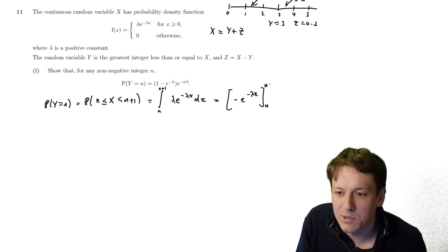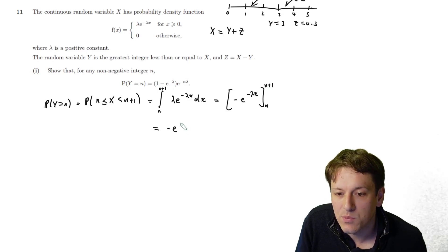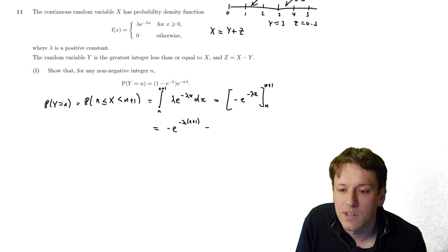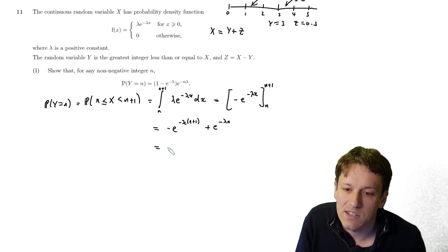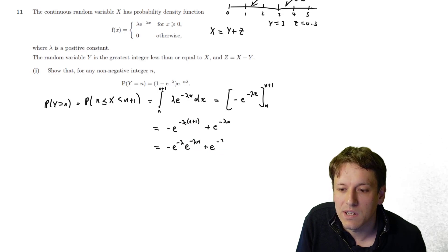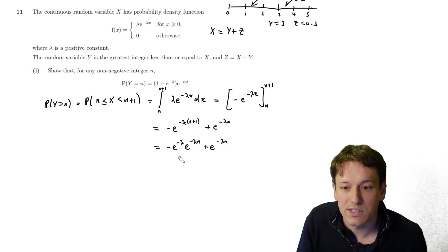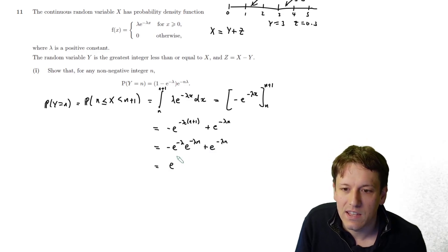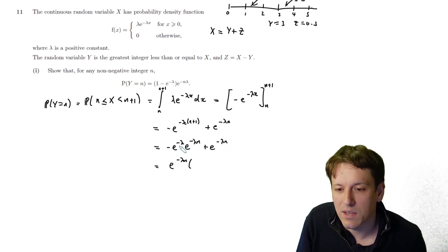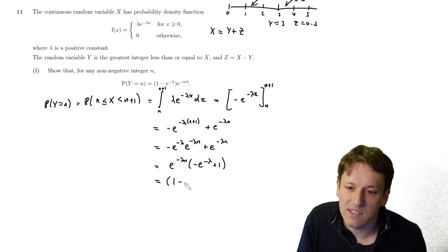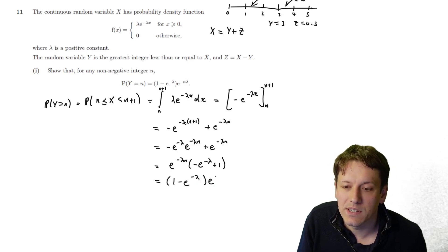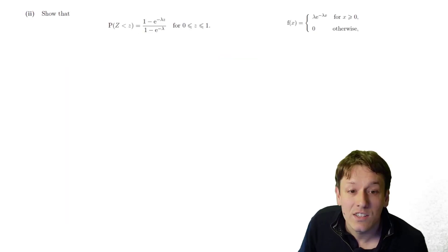The integral gives −e^(−λx) evaluated between n and n+1. Substituting in: −e^(−λ(n+1)) + e^(−λn). Factorising, this is e^(−λn)(−e^(−λ) + 1), which equals (1 − e^(−λ))e^(−λn) — exactly the formula we were asked to show. That completes part one.